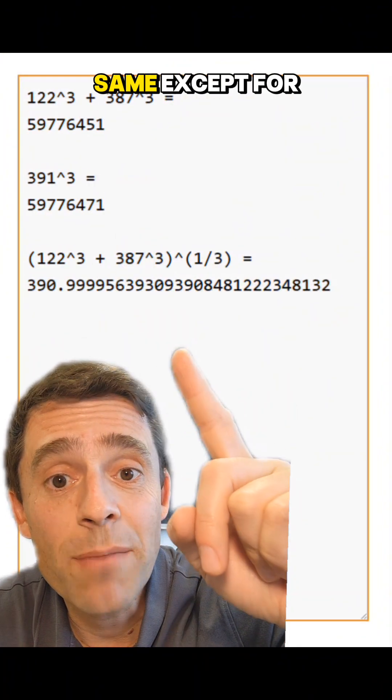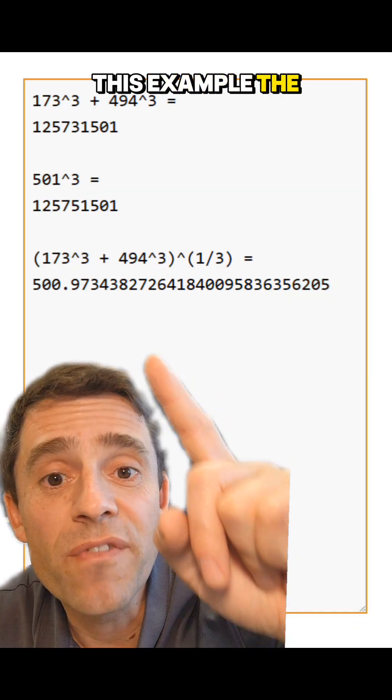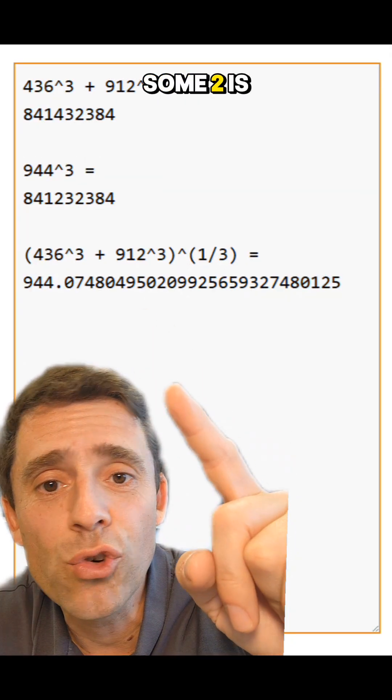In this example, they are the same except for the second digit, a 5 becomes a 7. In this example, the fifth digit differs, a 3 is a 5. In this one, some 2 is a 4.